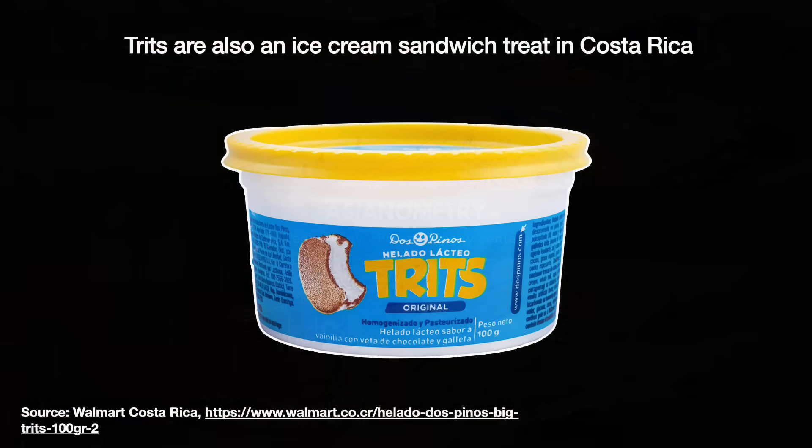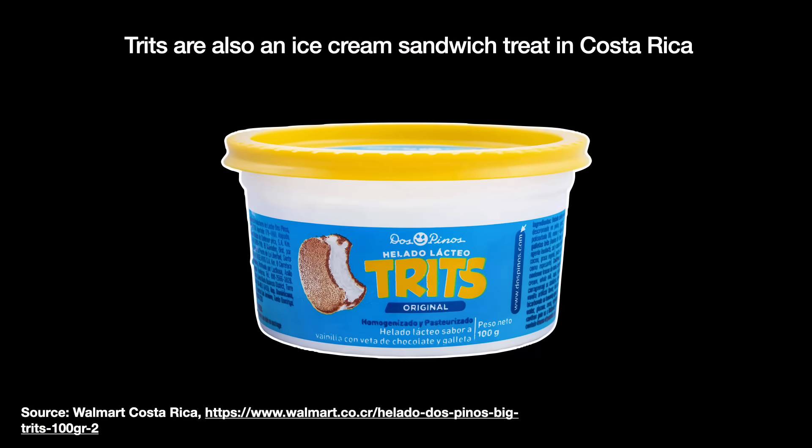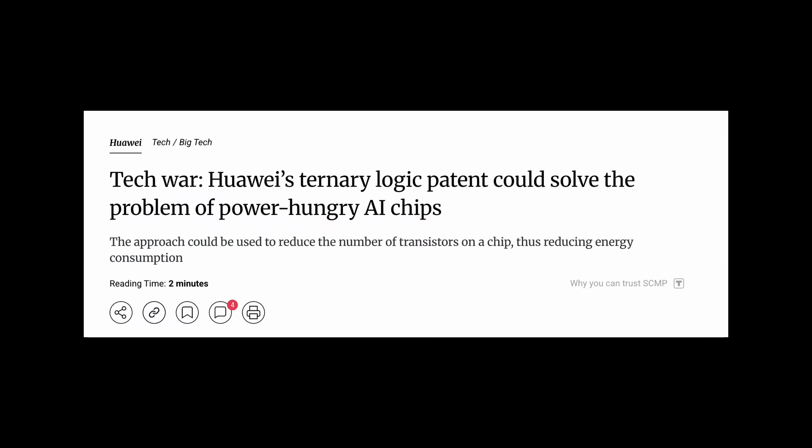Recently, people have been thinking about trits — and I don't mean the Costa Rican ice cream sandwich — meaning ternary, or base 3 compute. A three-value logic scheme different from the two-value binary logic scheme we are so familiar with. A few months ago, it made the rounds when news broke that Huawei patented a ternary computing circuit that can do AI.